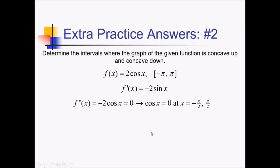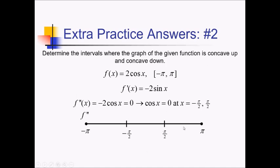Let's put this on an f double prime number line. I've got endpoints at negative and positive pi, and then critical values at negative pi over 2 and positive pi over 2. Testing something in each interval — be careful, we are using f double prime equals negative 2 cosine of x. Between negative pi and negative pi over 2, that's going to be the third quadrant, so cosine is negative normally, but we're already multiplying by a negative, so overall this is a positive result.